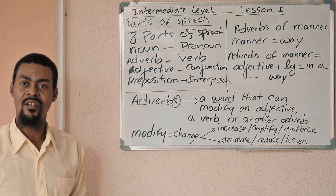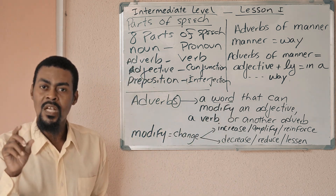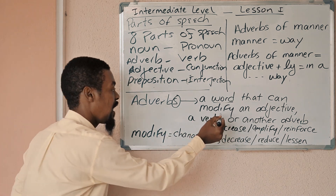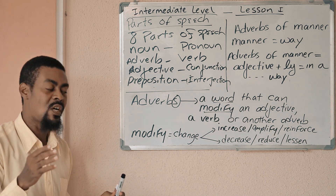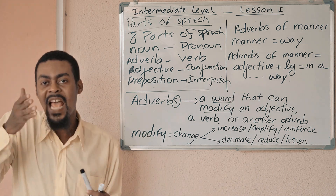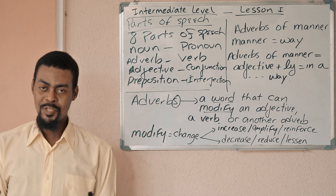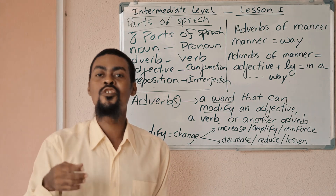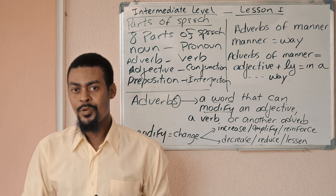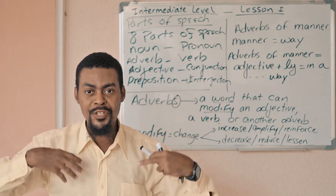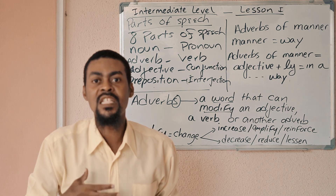An adverb is a word. What does this word do? It's a word that can modify. What's the meaning of modify? When you modify something or someone, that means there's a change that happens in that thing, that place, that animal, or that person. For example, if someone smokes cocaine, there's a modification — something that happens to your body.